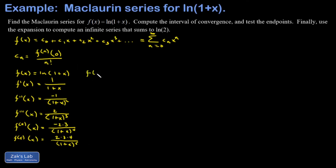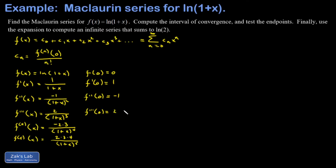When I compute f of 0, I end up with 0. When I compute f prime of 0, I end up with 1. When I compute f double prime of 0, I end up with negative 1. For f triple prime of 0, things get a little more interesting — now I have a 2. Fourth derivative evaluated at 0, now I have negative 2 times 3. Fifth derivative evaluated at 0, now I have 2 times 3 times 4.